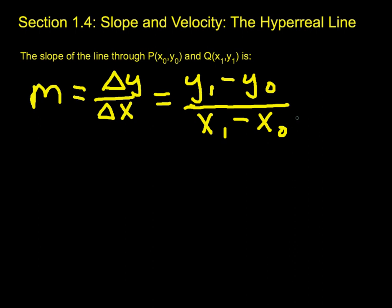This idea shows up in other places besides just lines. One example we worked out last time was a particle moving — its velocity is the change in position. So if y is the position and x is time, then velocity is the change in position over change in time. Central to the questions in differential calculus will be: what is the slope of a curve?